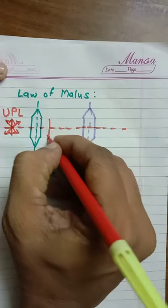Then it is observed that only those vibrations which are parallel to the axis of Tourmaline plate 1 are passed by the plate. Hence, emergent light is called plane polarized light.